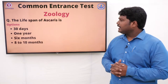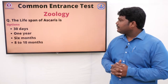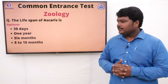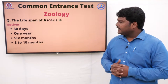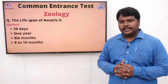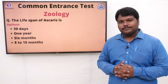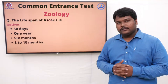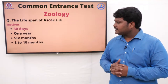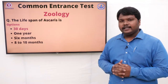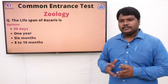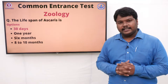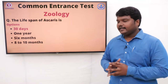Question 43: The lifespan of Ascaris is. Options: A) 30 days, B) 1 year, C) 6 months, D) 8 to 10 months. The right option is 30 days. The lifespan of Ascaris is 30 days.